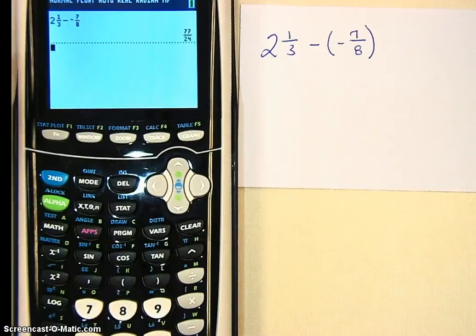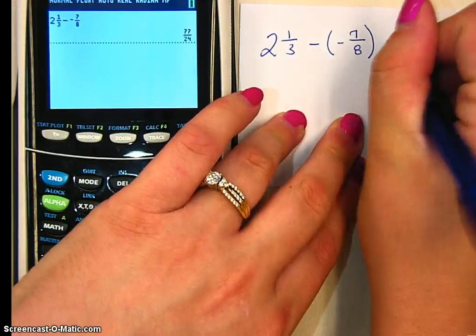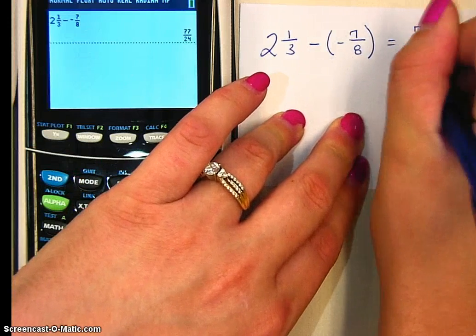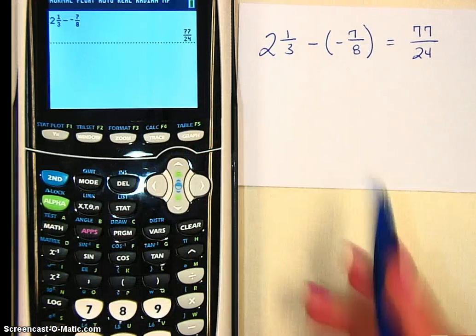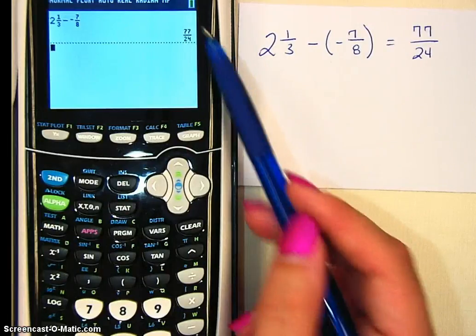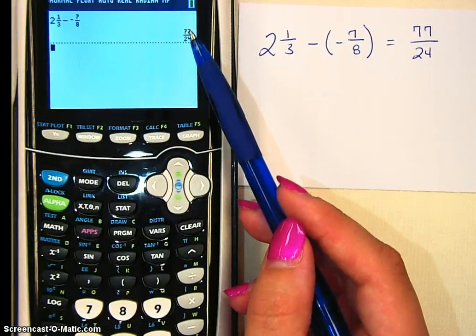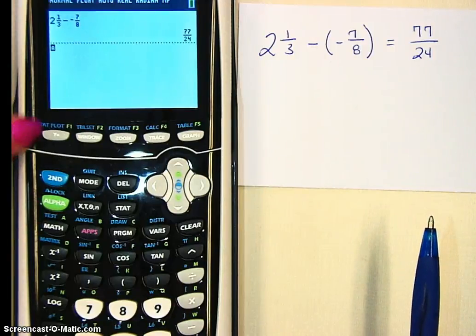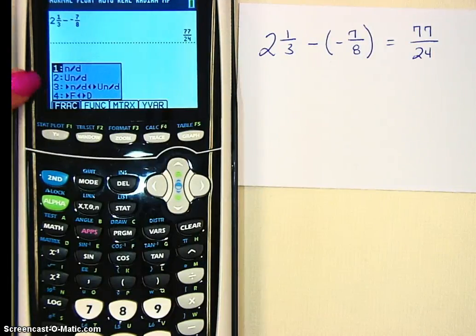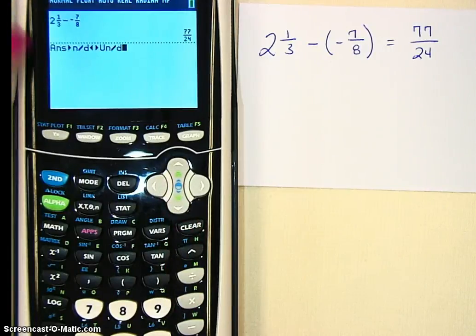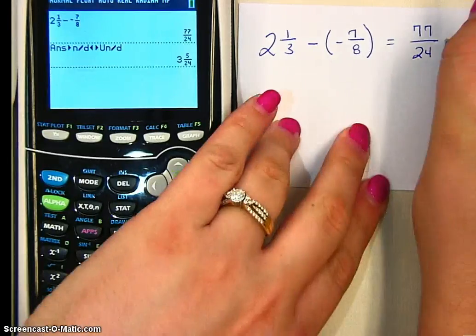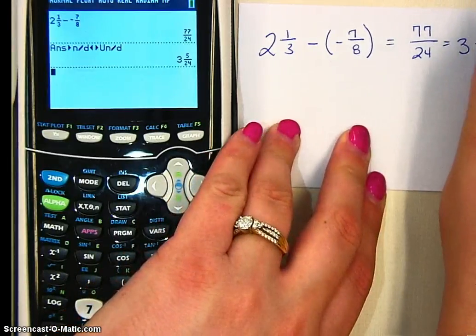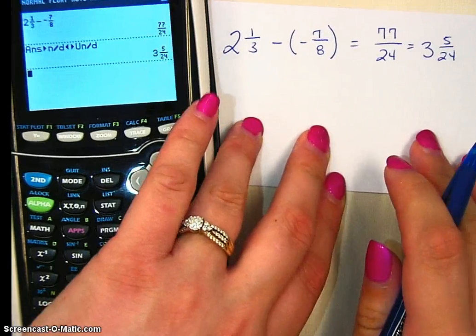When I hit enter, you'll notice it gave me the answer 77 over 24. The calculator always puts it into an improper fraction. This is a good answer. You can always put this answer. But if you want it as a mixed number, all you have to do is hit alpha, y equals, and then option number 3 will change it to a mixed number. Just hit enter on it. It'll come up answer to mixed number. Hit enter again. And you'll notice that this is the same as 3 and 5 over 24. So either of these answers are acceptable.